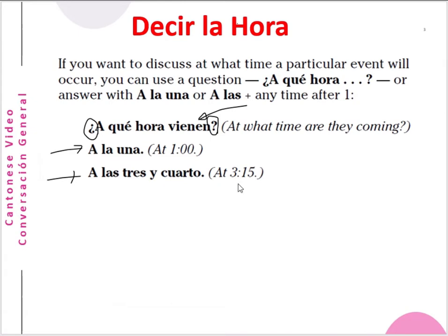The answer may be a la una — as one o'clock, they will come. And a las tres y cuarto — it's three o'clock and a quarter. Cuarto means a quarter, fifteen minutes. You can also say a las tres y quince — three o'clock and fifteen minutes. These two expressions mean the same thing.